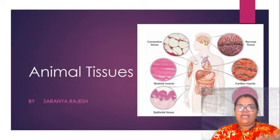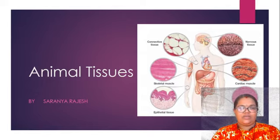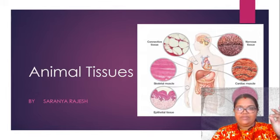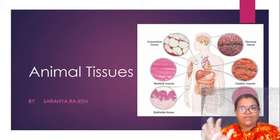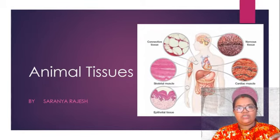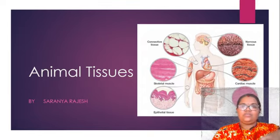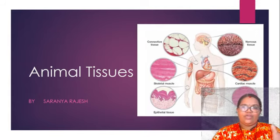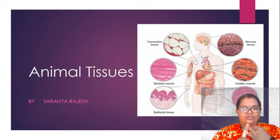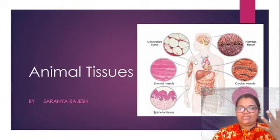We know that the animal body is a complex structure. There are different parts doing different functions. That means there are different cells which have different functions. All these functions are carried out by different tissue systems, and we have divided all tissue systems into different categories. If you are dividing animal tissue, you can divide it into epithelial tissue, muscular tissue, nervous tissue, and connective tissue.